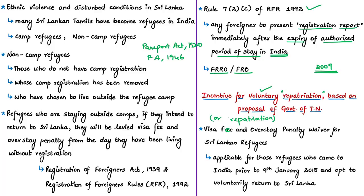There was a demand, including a proposal from the government of Tamil Nadu, to waive overstay penalty and visa fees for Sri Lankan Tamil refugees willing to go back. After considering this proposal, the central government decided on 16th December 2015 to bring a scheme for such deserving vulnerable refugees, called the Visa Fee and Overstay Penalty Waiver for Sri Lankan Refugee Scheme, framed by the Ministry of Home Affairs. This scheme allows waiver of the visa fee and overstay penalty for Sri Lankan refugees who are willing to undergo voluntary repatriation.